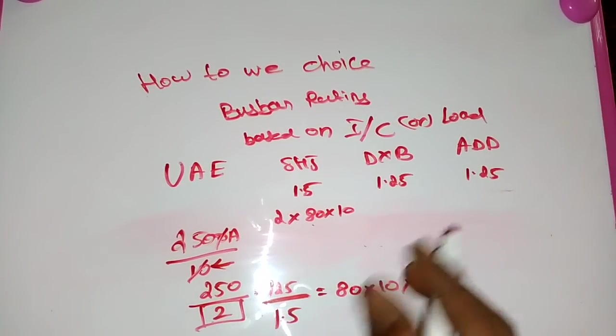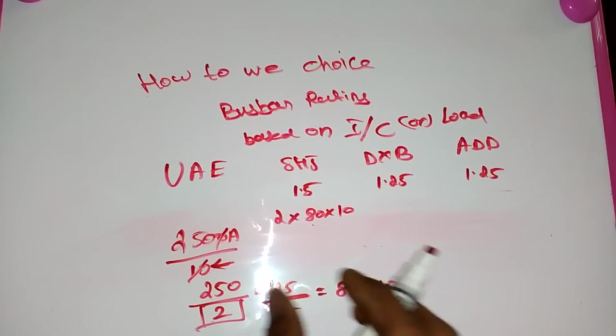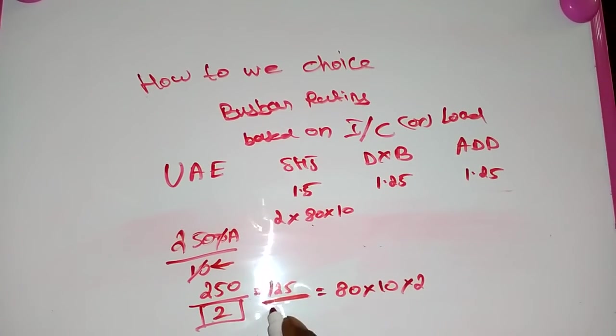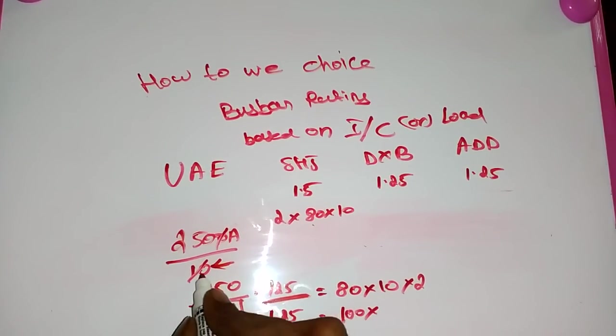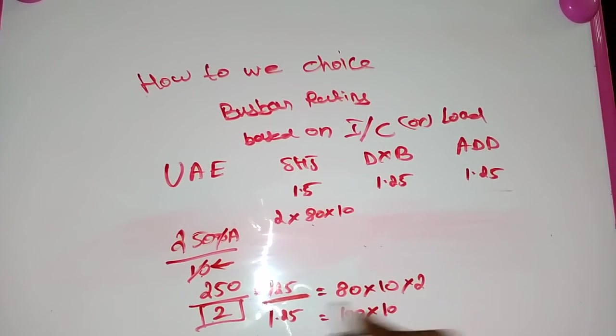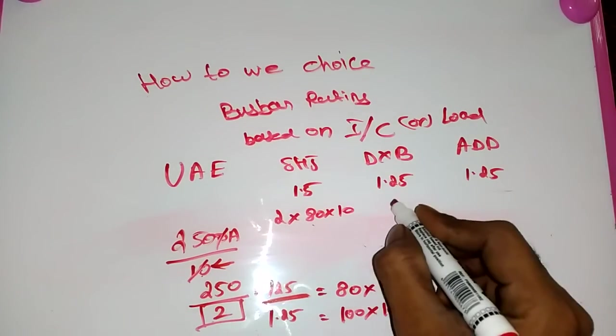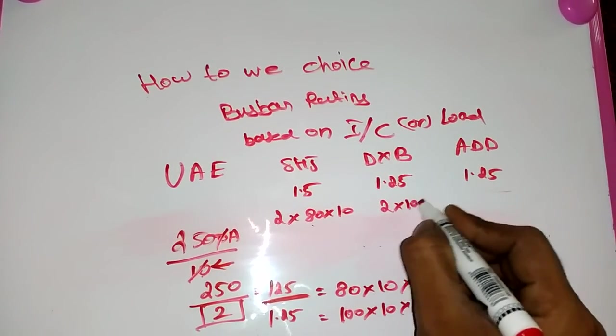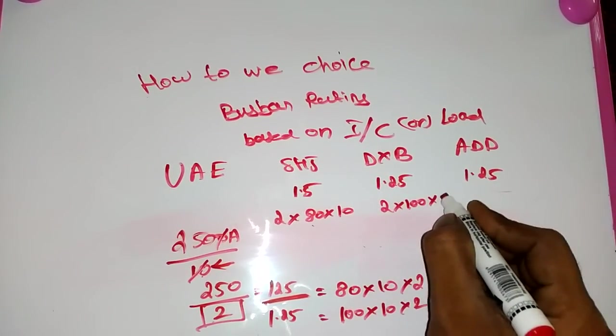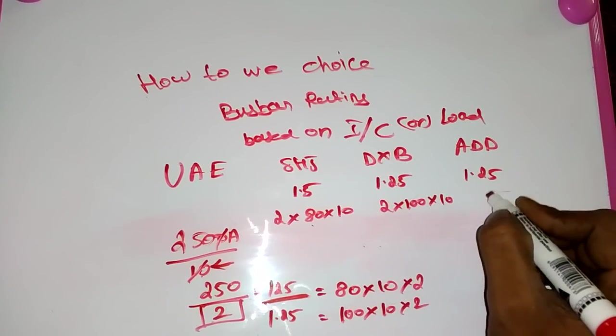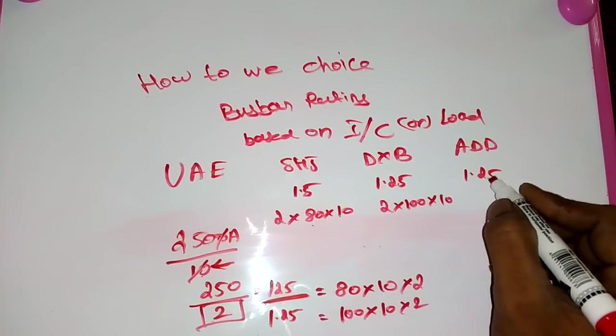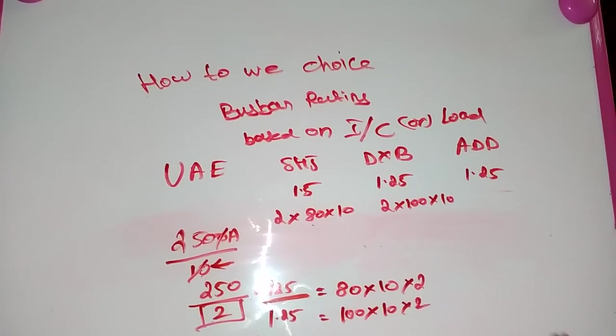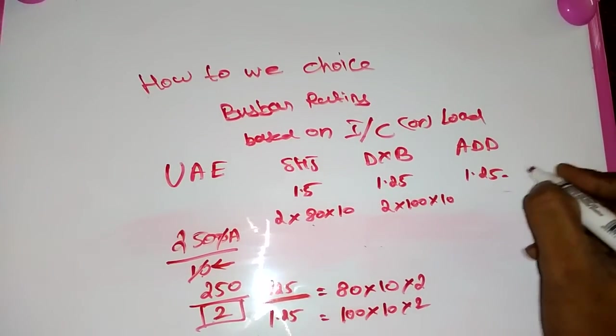Suppose you design for Dubai, just change here 1.25, so we got here 100. Already we do for 10mm, so already we have 2, so here 2 into 100 into 10.